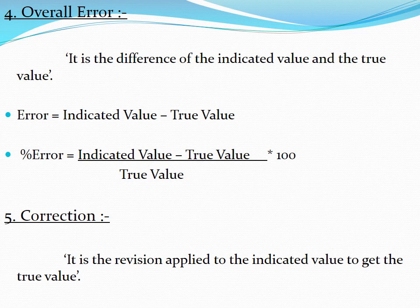For example, if the true value of current is 3.5 amperes but the ammeter indicates 3.4 amperes, then the error is 3.4 − 3.5 = −0.1 ampere. And the percentage error is (3.4 − 3.5) / 3.5 × 100 = −0.1 / 3.5 × 100 = −2.86%. So that is the percentage error.